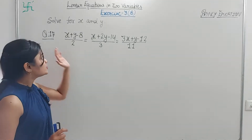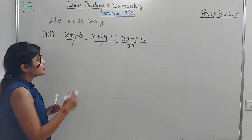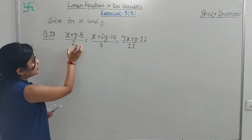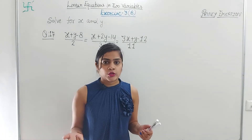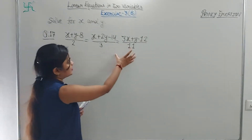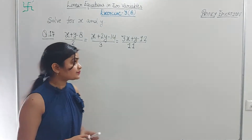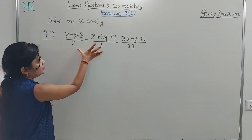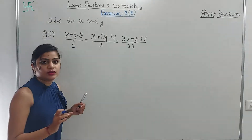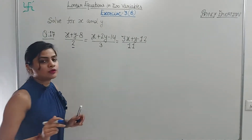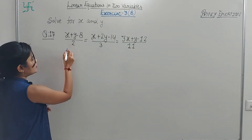Here, question number 17 — this is a little different question. What you have been given is that these expressions are equal. You have not been given two separate equations directly; instead, you are told this term equals this term and this term equals this term. So how do we solve this? First, we set the first expression equal to the second, and the second equal to the third.